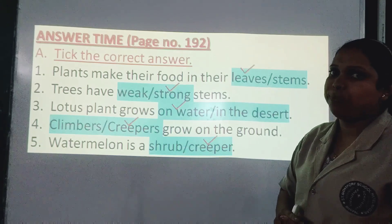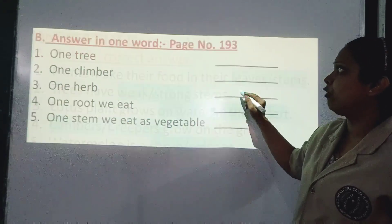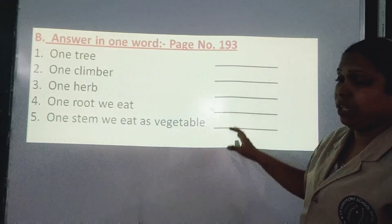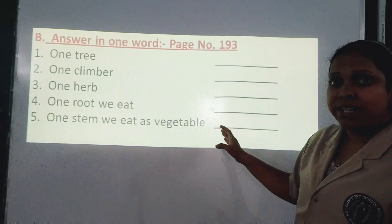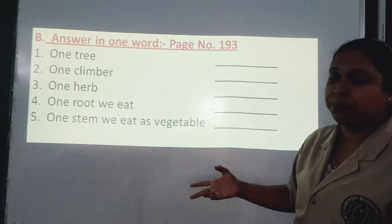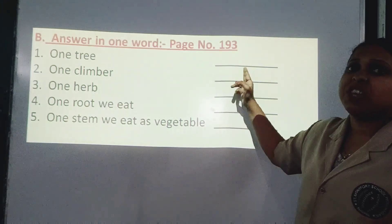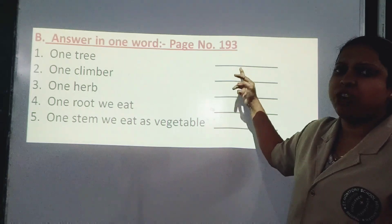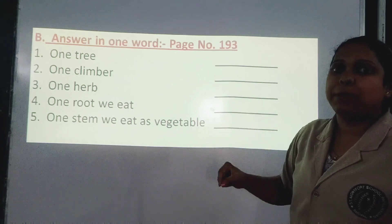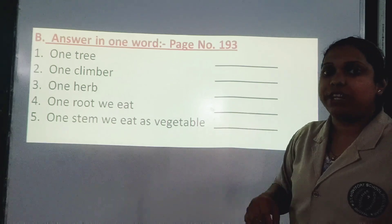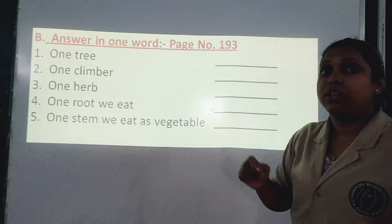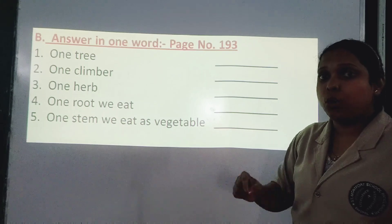I hope all answers are marked. Now the next question is on page number 193. In this section you are free to write any name you know the spelling of. For one tree, you can write neem tree, apple tree, mango tree, banyan tree, or coconut tree — the word 'tree' must be there. Next, one climber's name — like bean plant, money plant, or grape vine.